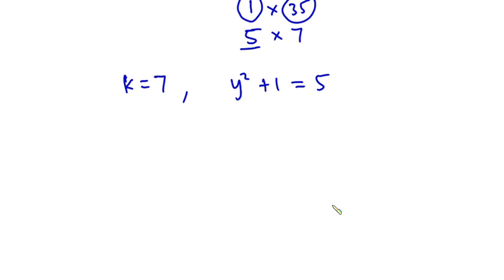Now let's go ahead and solve for y from this equation. We have y² equals 5 minus 1, so this implies that y² equals 4.